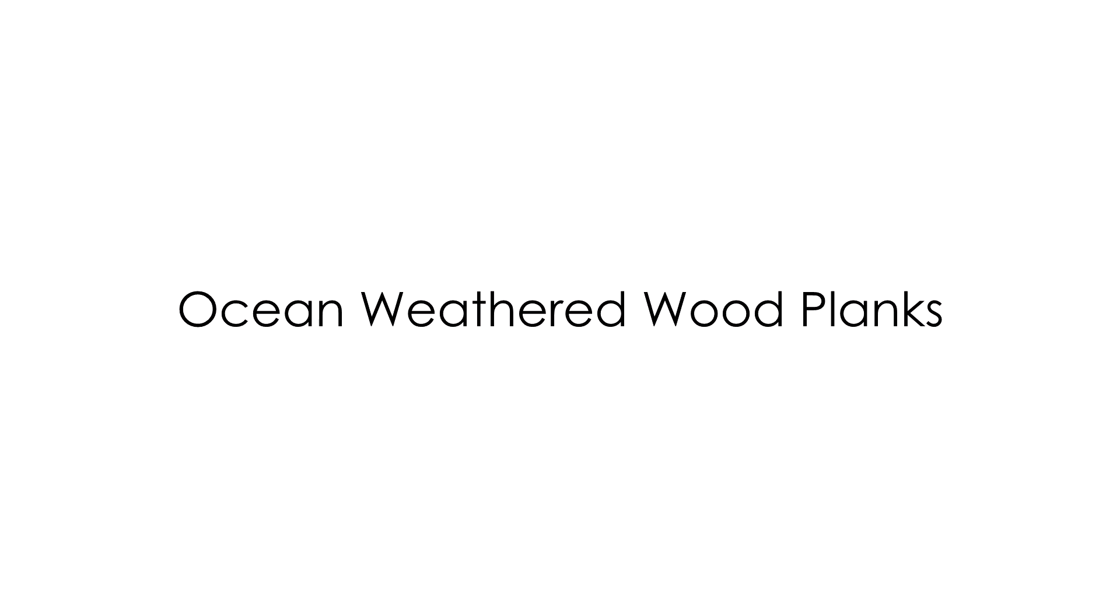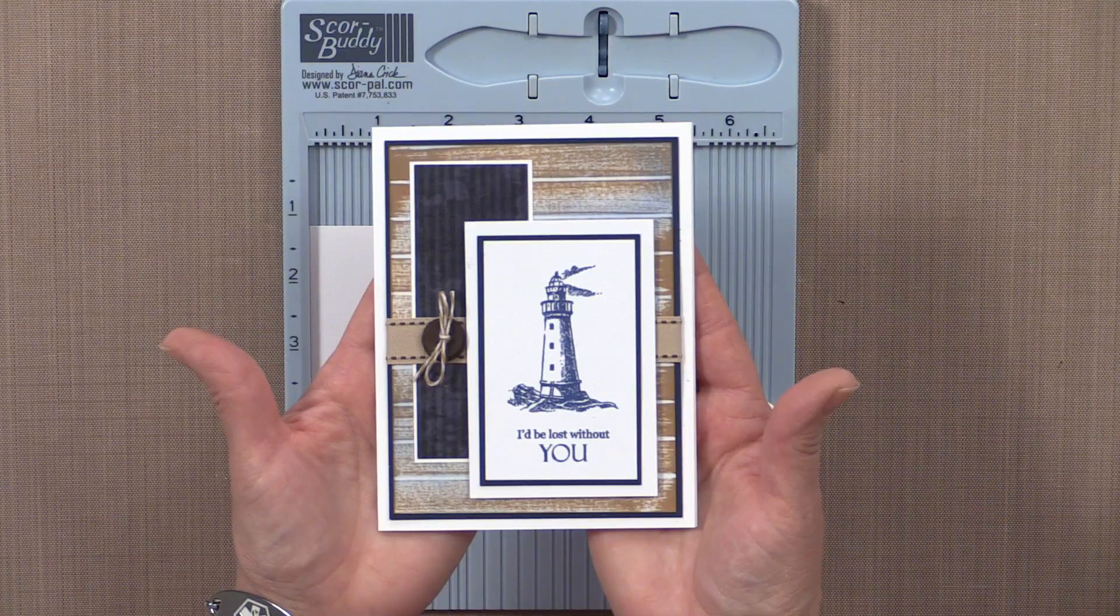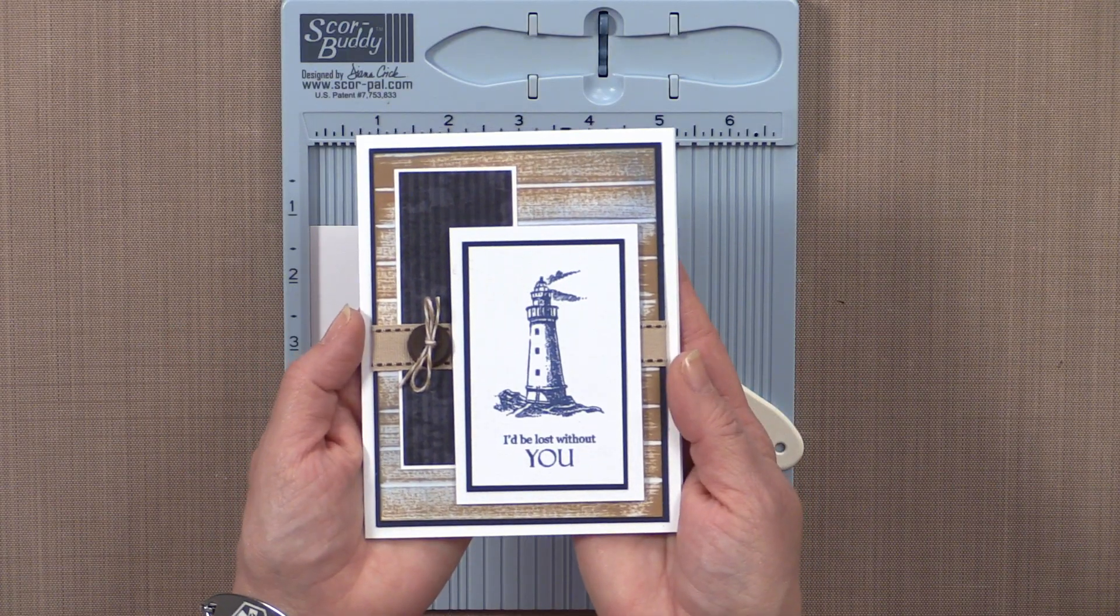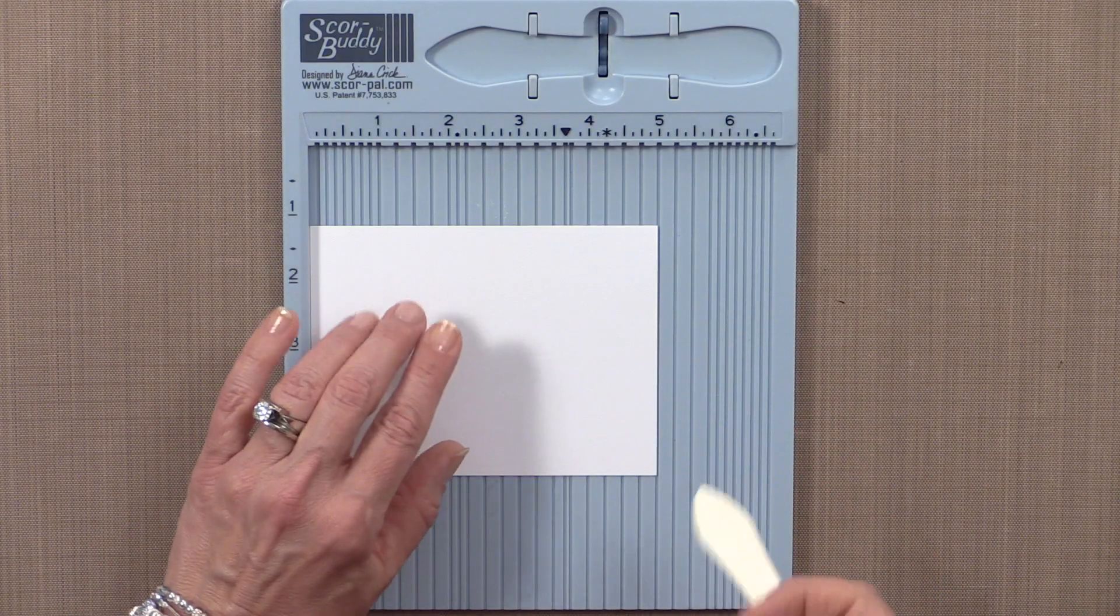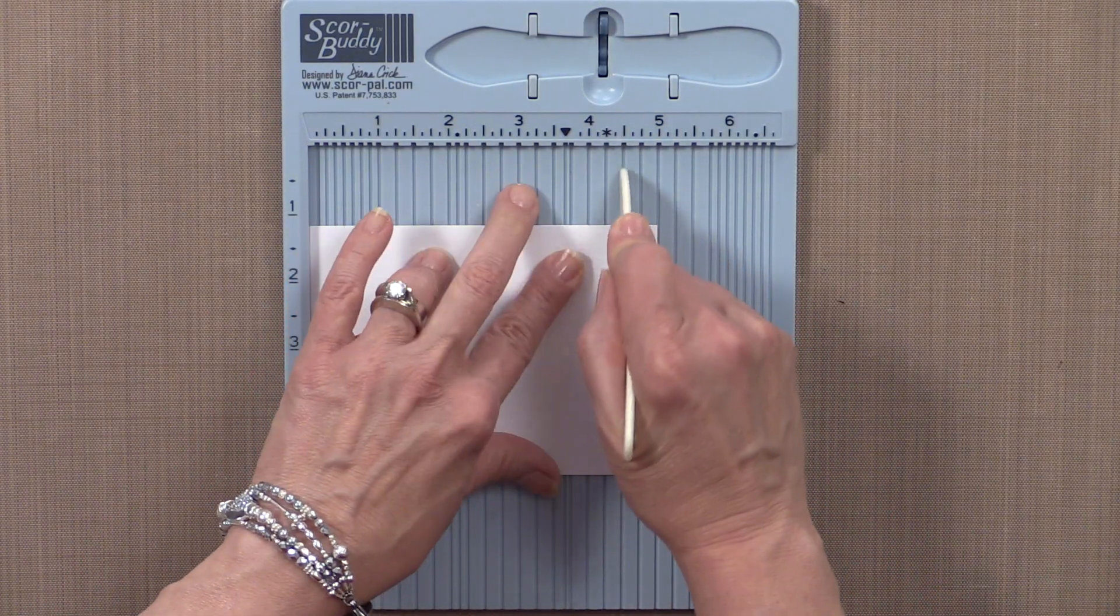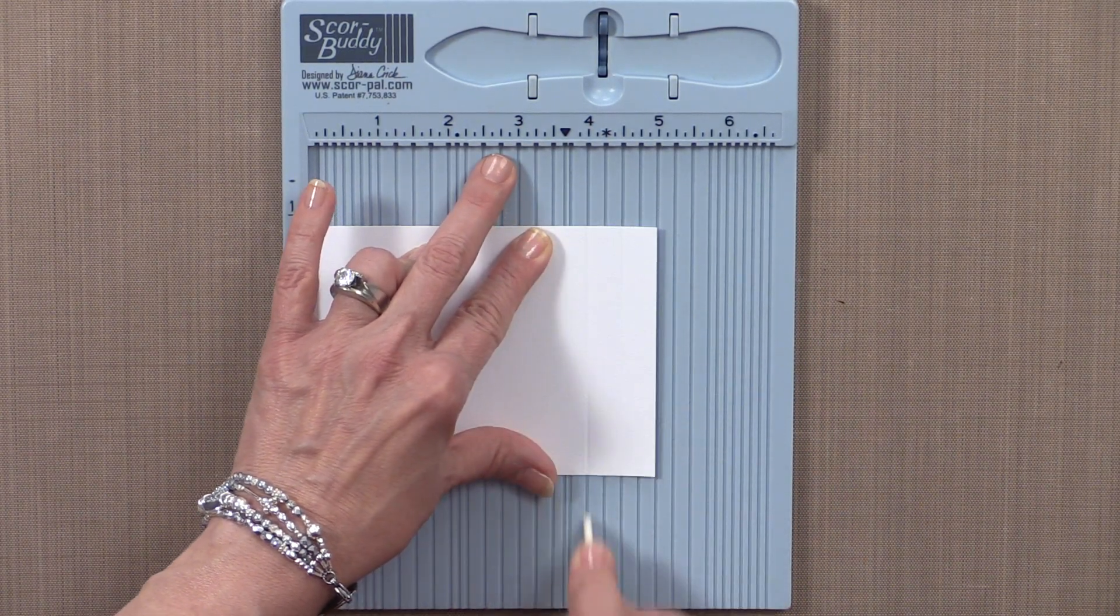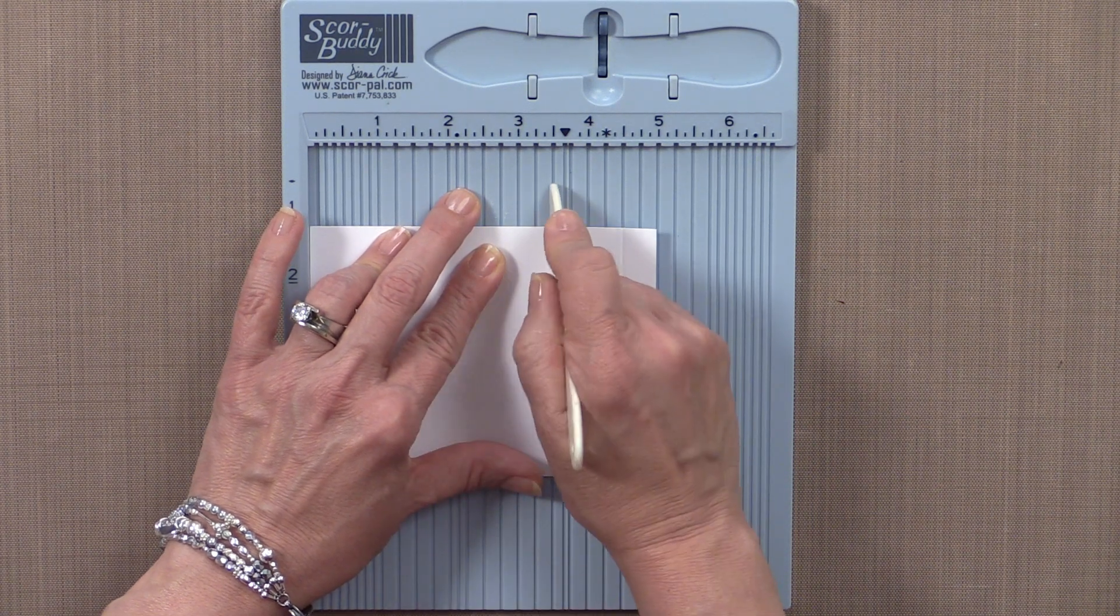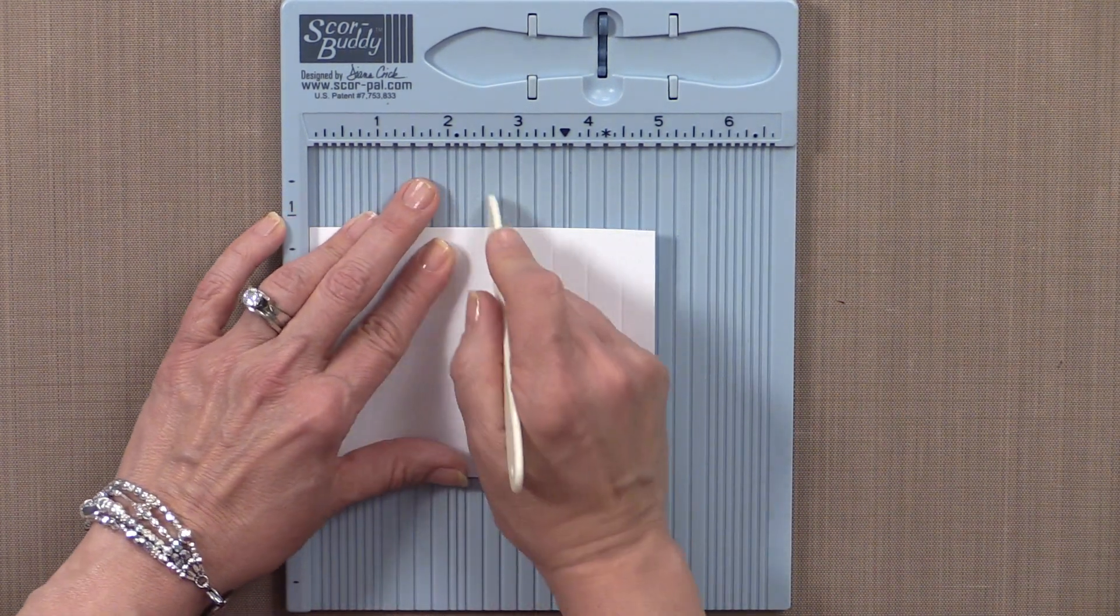The second technique is ocean weathered wood planks. You can see in this card, it looks a lot lighter and softer. I love that little bit of blue in there. So again, I'm starting with a three and three quarter inch by five inch panel. I'm going to score half inch score lines at four and a half inches, four inches, three and a half inches, three inches, two and a half inches.